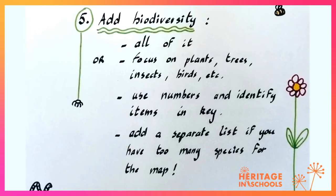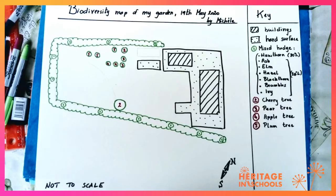Then you want to add your biodiversity. You can choose to add all of it or focus on plants, trees, insects, or birds. I usually use numbers to identify the different items — for example, on this map number two is a cherry tree — and I identify them all in the key.